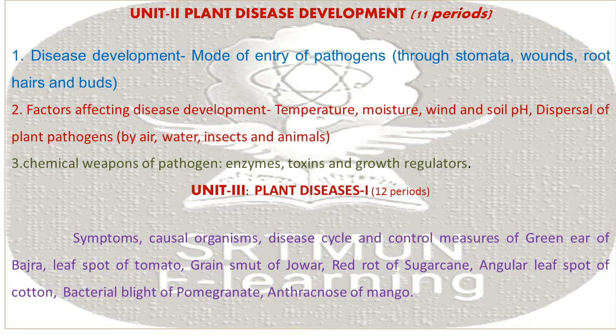Unit Third: Plant Disease First. Symptoms, causal organisms, disease cycle, and control measures of: green ear of bajra, grain smut of bajra, red rot of sugarcane, angular leaf spot of cotton, leaf spot of groundnut, bacterial blight of pomegranate, and anthracnose of mango.